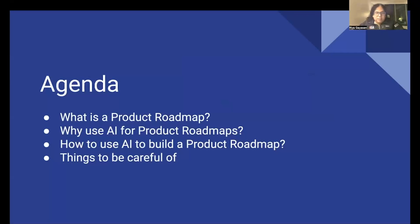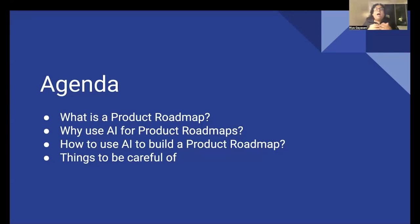Today's presentation is going to have four parts. Number one is what exactly is a product roadmap — a lot of you are product managers already, but it would be good to define it just to make sure we are all on the same page. Number two is why — why do you use AI for product roadmapping? Number three is the meat of this presentation: how do you use AI to build a product roadmap? And finally, I'm going to touch upon a few things to be careful of, some caveats.